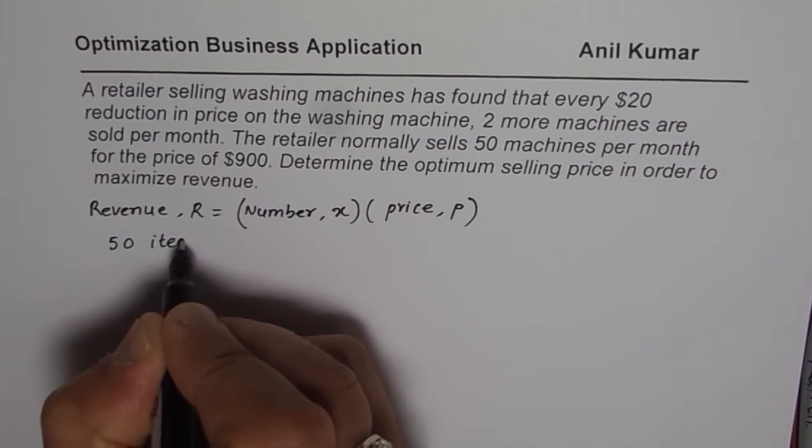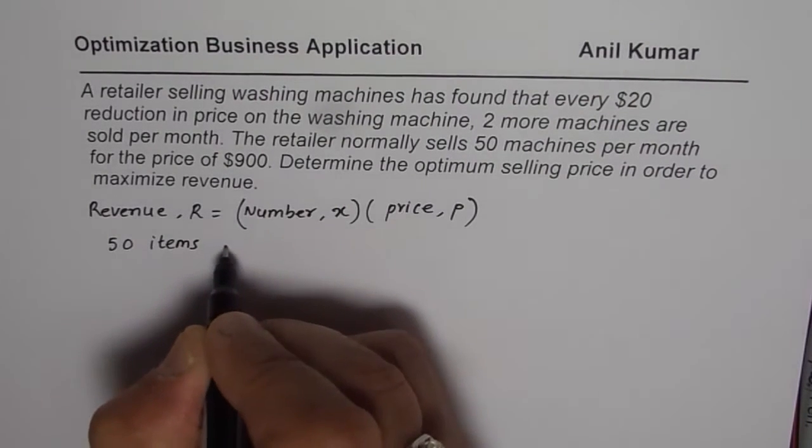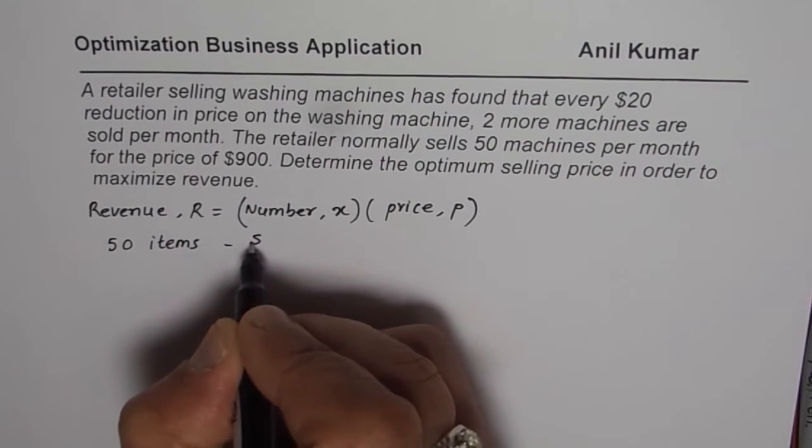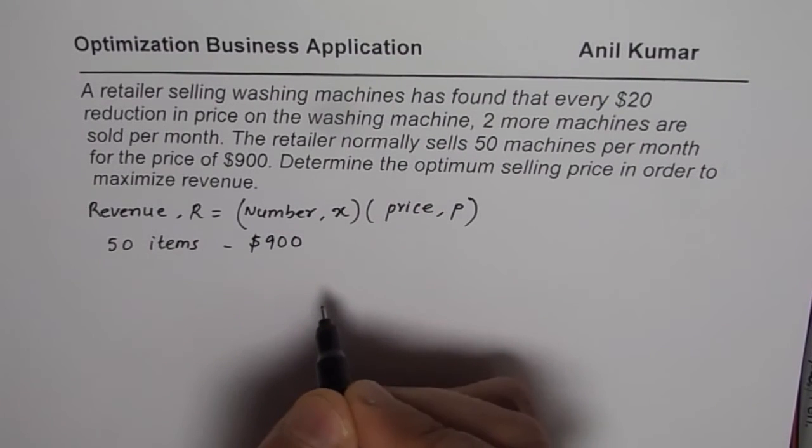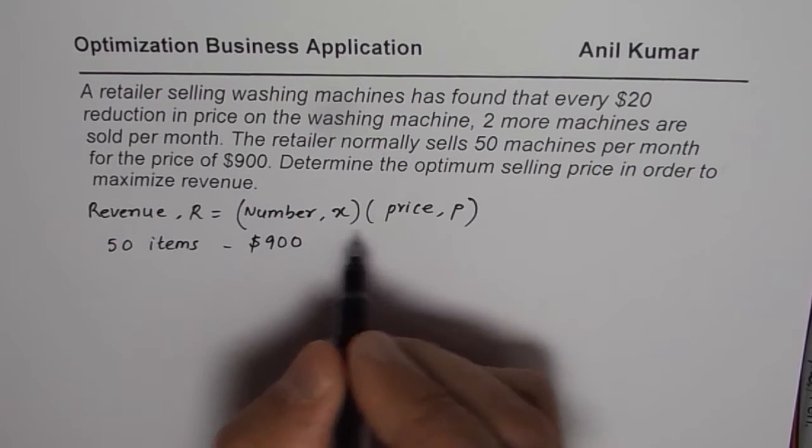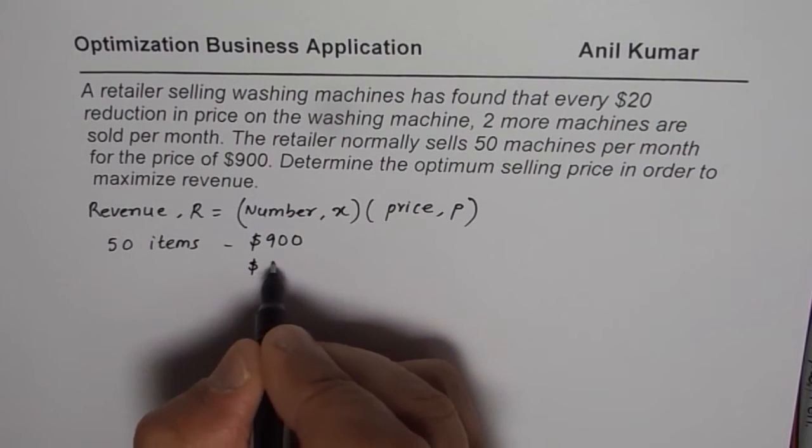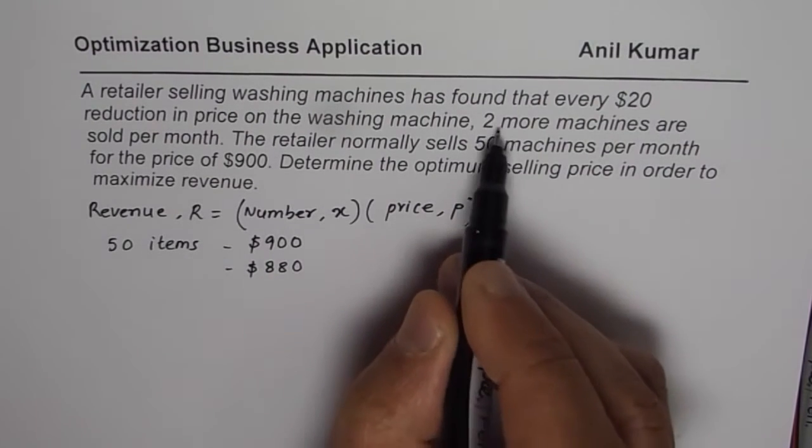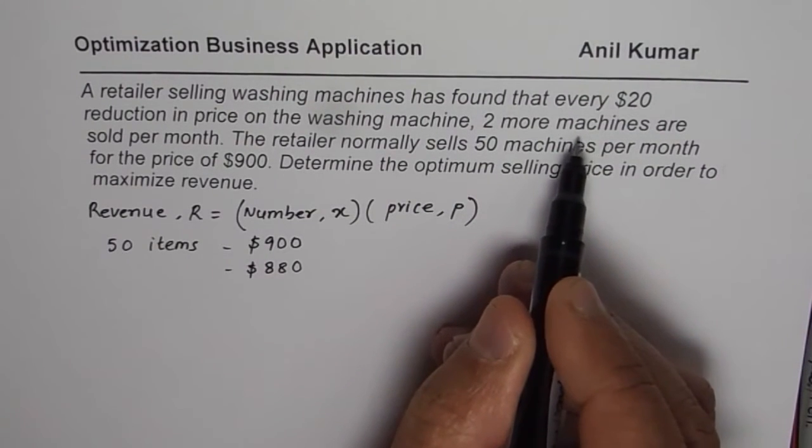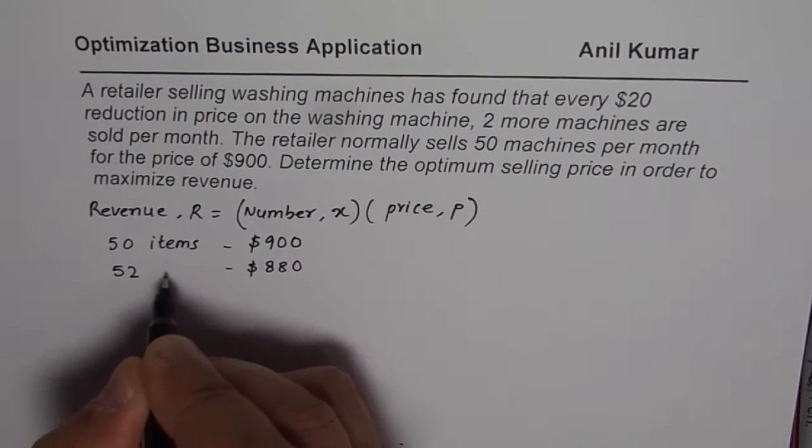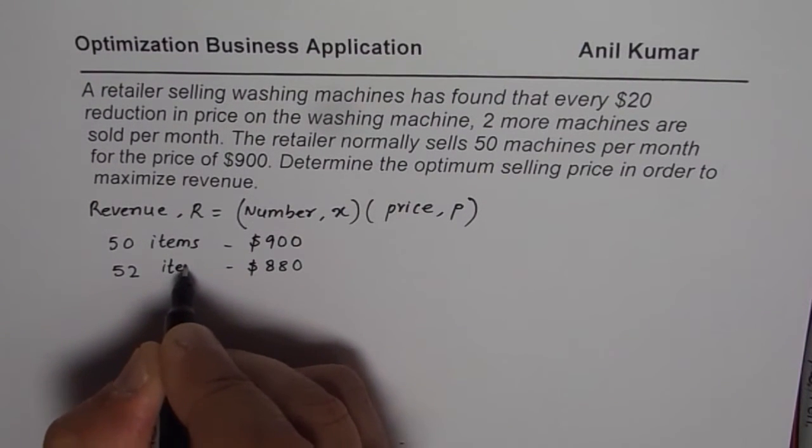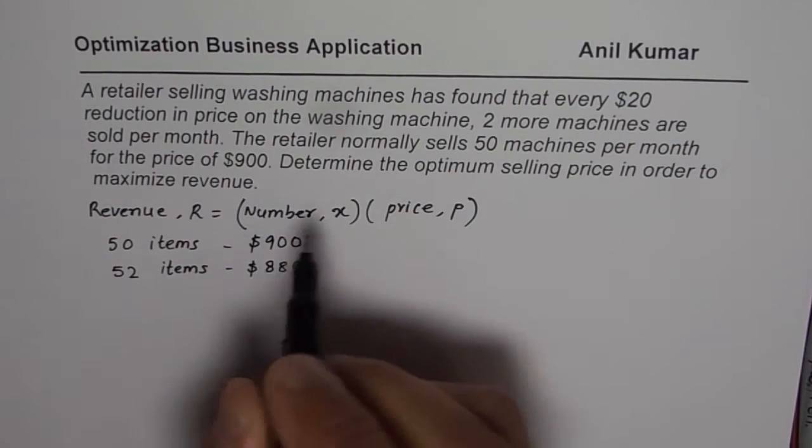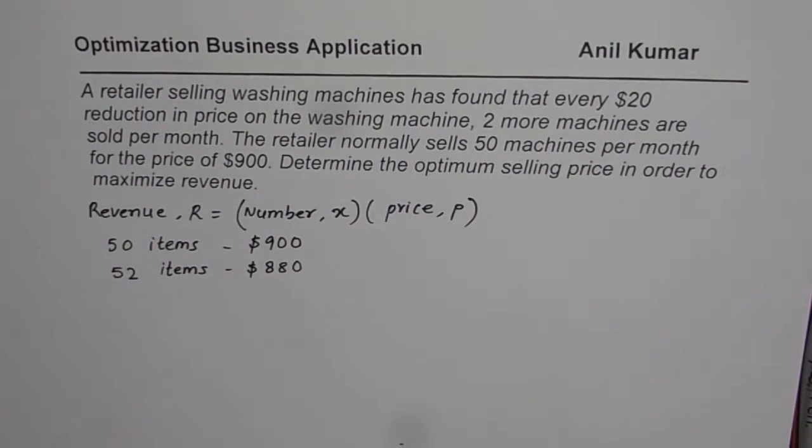We can say that if the price is $900, then the items sold are 50. So for 50 items, price is $900. If we decrease this price by $20, then it becomes $880. So for $880, two more machines will be sold, so there will be 52 machines sold. That is how number of items and price is related.